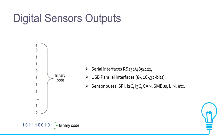Digital sensors' output usually comes as binary code — either 1 or 0, such as 110, 111, or 10. The serial interfaces RS-232, RS-485, and RS-422 are available in today's market. USB parallel interfaces — either 8-bit, 16-bit, or 32-bit — are also available. Sensor buses such as SPI, I2C, CAN, SMBUS, and LIN are available in today's market.